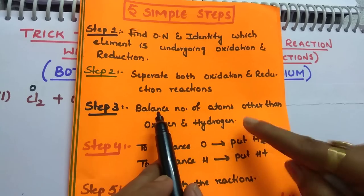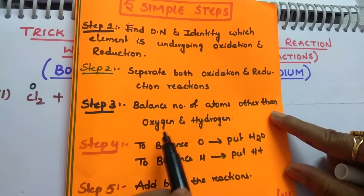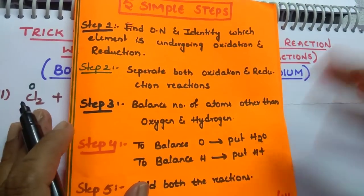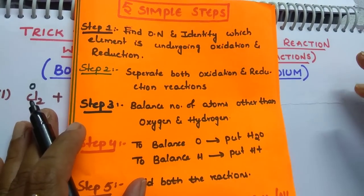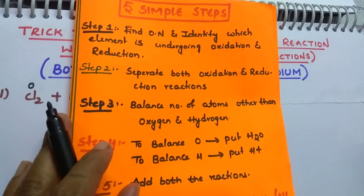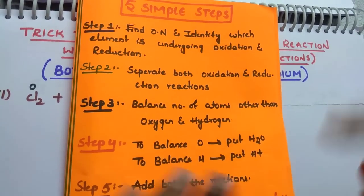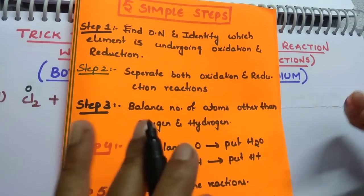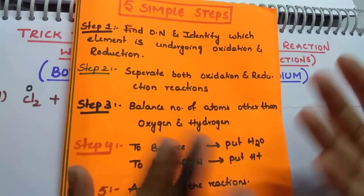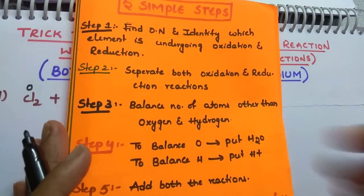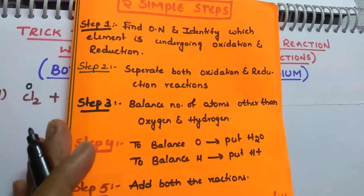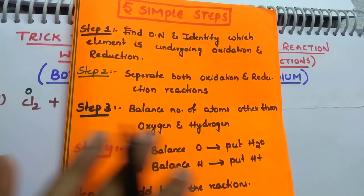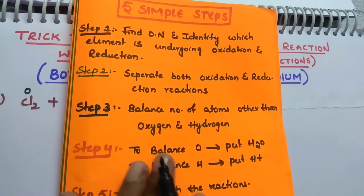Step number 3: balance number of atoms other than oxygen and hydrogen. Once you balance the number of atoms, don't balance oxygen and hydrogen yet. After balancing number of atoms, balance the number of electrons change. Some students do charge balancing — you can do it that way too — but electron balancing is easier. Many students asked me about charge balancing in a previous video, so I do it this way — balance in the form of electrons and it will be easy.